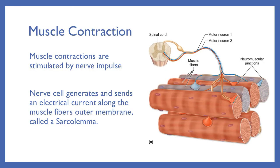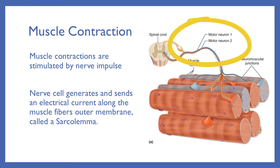A muscle contraction is going to be stimulated by a nerve impulse. Nerve cells generate and send an electrical current along the muscle fiber's outer membrane, called the sarcolemma. If I decide to make a movement — say I'm going to pick up a water bottle — that impulse is going to travel down from my brain, through my spinal cord, until it finally goes out on a motor neuron. A motor neuron produces movement, and that neuron could run all the way to my fingertips that are going to grasp the bottle.